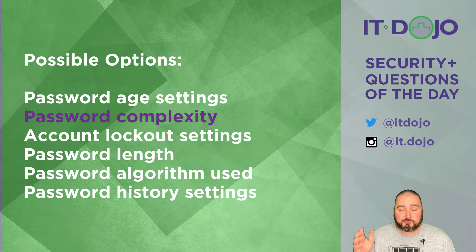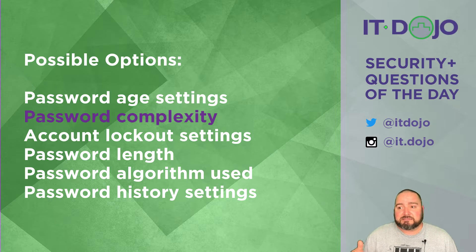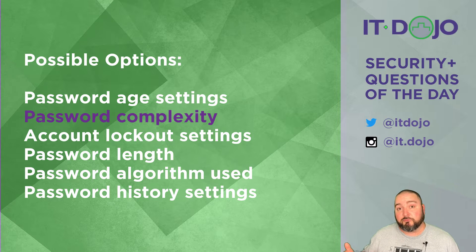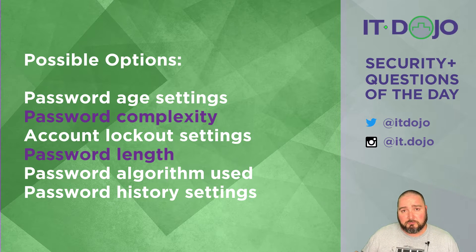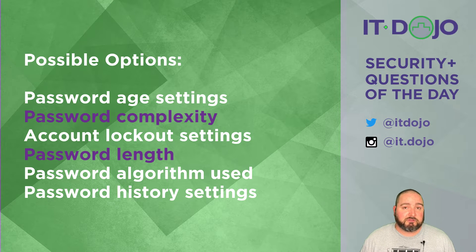Third item: account lockout settings — if you were trying to directly attack a login interface, the account lockout setting might prevent somebody from logging in, but the question is about cracking a hash. That means the attacker already has the hash and is off somewhere brute forcing or dictionary attacking it. Account lockout has nothing to do with how long that takes. Next: password length — by itself, not quite. A long dictionary word is arguably just as easy to crack as a short one. But length combined with complexity is definitely a contributing factor to how much work the attacker has to do.